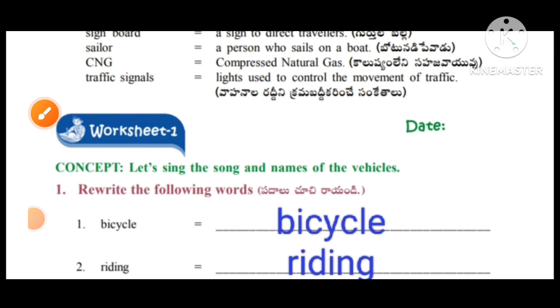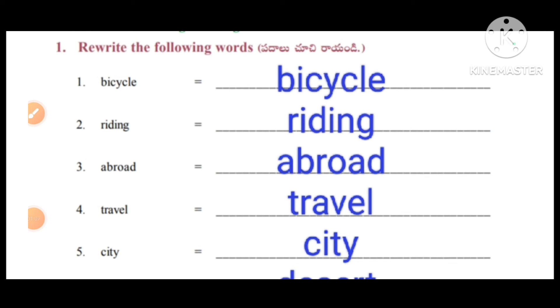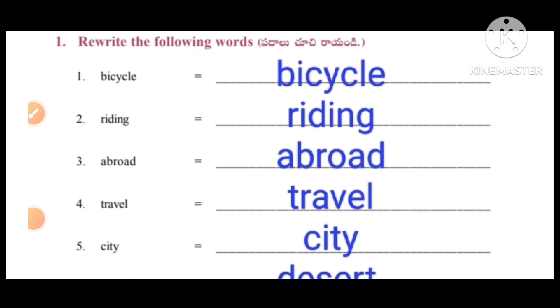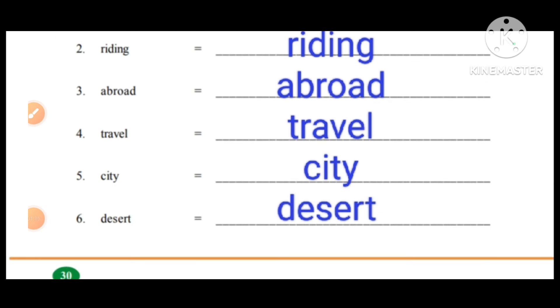Worksheet 1, concept: let's sing the song and names of vehicles. First one: bicycle, riding, abroad, travel, city, desert.